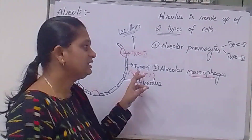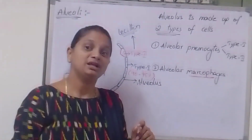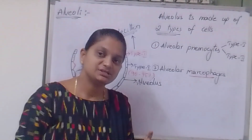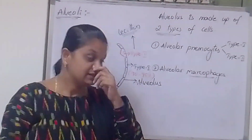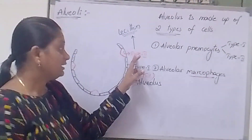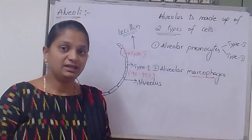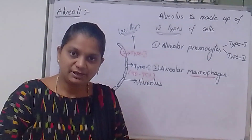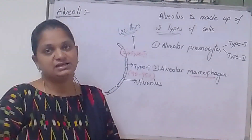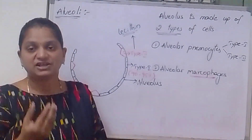Type 1 pneumocytes are responsible for gaseous exchange. Type 2 pneumocytes increase the surface tension capability and help increase the efficiency of Type 1 pneumocytes for gaseous exchange.